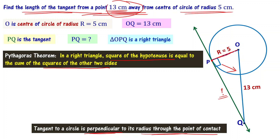In this case, OQ is the hypotenuse since angle P is 90 degrees. So OQ square equals OP square plus PQ square. Substituting OQ equal to 13 and OP equal to 5 into the equation: 13 square equals 5 square plus PQ square.